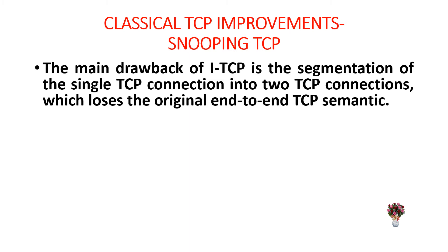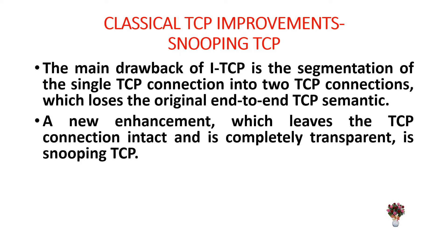The main drawback of ITCP, that is indirect TCP, is the segmentation of the single TCP connection into two TCP connections, which loses the original end-to-end TCP semantic. A new enhancement which leaves the TCP connection intact and is completely transparent is snooping TCP.